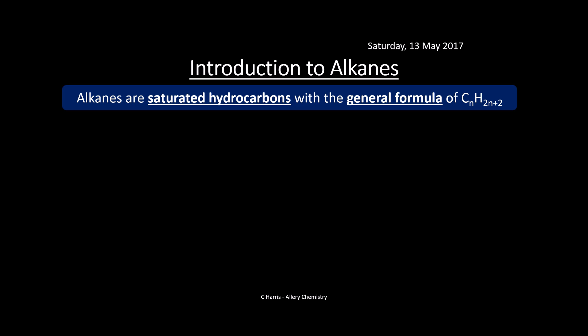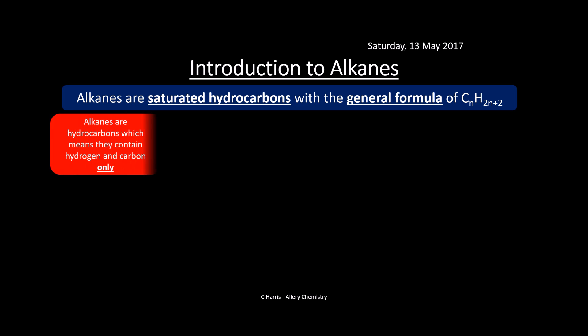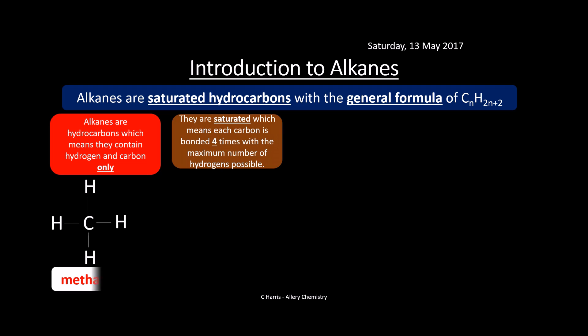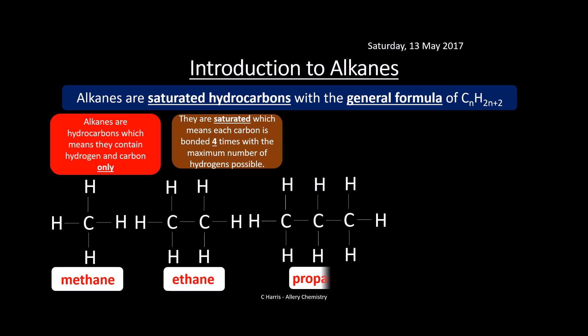Alkanes are all saturated hydrocarbons. They have the general formula CₙH₂ₙ₊₂. They contain hydrogen and carbon only. They are saturated, which means each carbon is bonded four times with the maximum number of hydrogens possible. We've got some examples: methane on the left, ethane in the middle, propane on the right — these are all examples of alkanes.